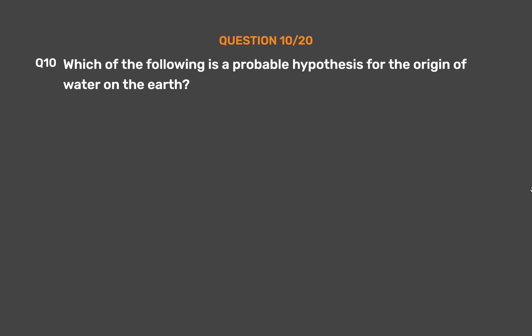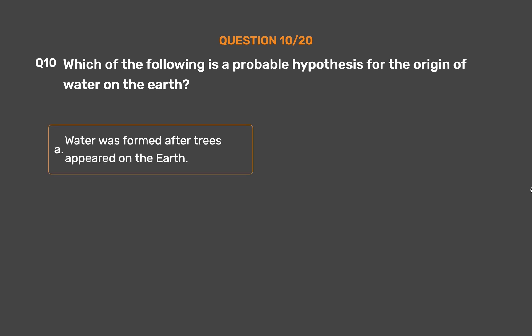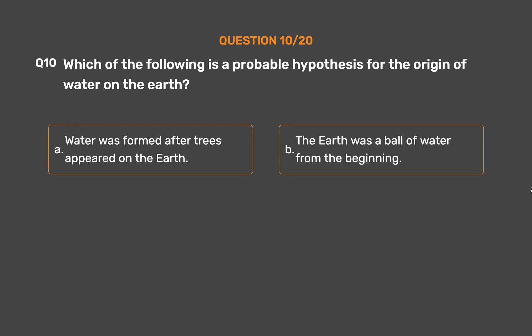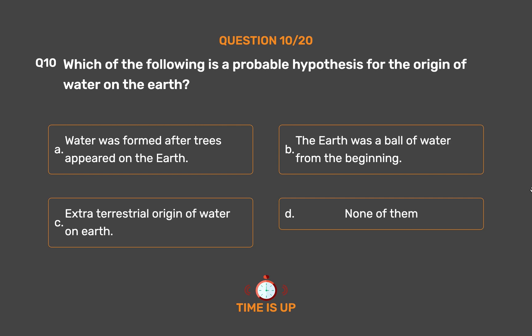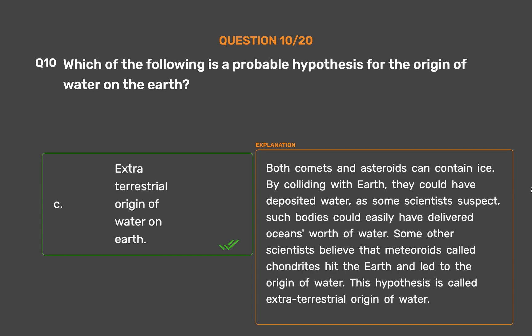Question number 10. Which of the following is a probable hypothesis for the origin of water on the earth? Option A: Water was formed after trees appeared on the earth. Option B: The earth was a ball of water from the beginning. Option C: Extraterrestrial origin of water on earth. Option D: None of them. The correct answer is Option C: Extraterrestrial origin of water on earth. Both comets and asteroids can contain ice; by colliding with earth, they could have deposited water — such bodies could easily have delivered oceans' worth of water. Some scientists believe that meteoroids called chondrites hit the earth and led to the origin of water. This hypothesis is called extraterrestrial origin of water.